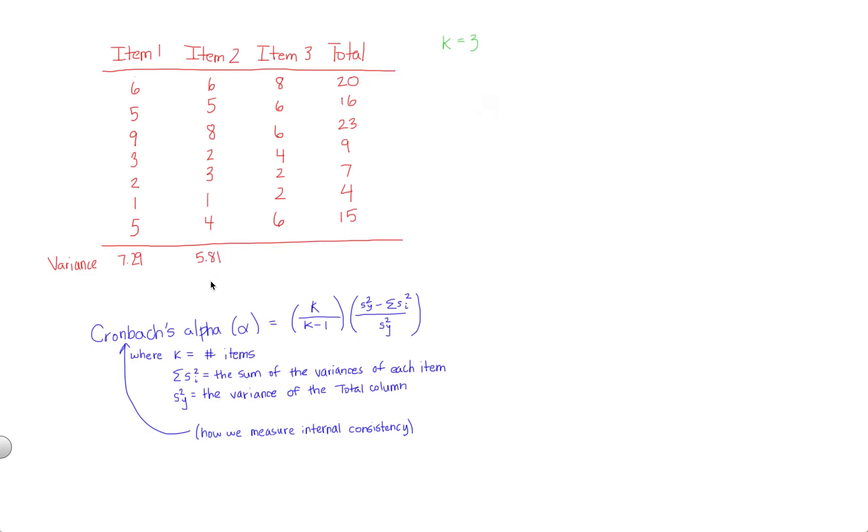So the sample variance for item two is 5.81. The sample variance for item three is 5.14. And the sample variance for the total column is 48.95. So once you've done this, this will take some work, but once you've done this, you're ready to plug into your formula.